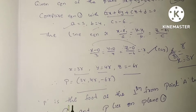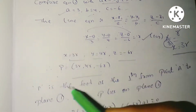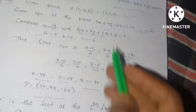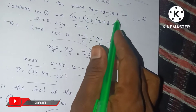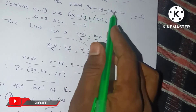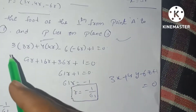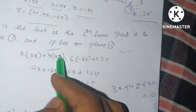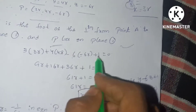Point P is the foot of the perpendicular from point A to the plane, so P lies on plane 1. The plane equation is 3x + 4y - 6z + 1 = 0. Substituting the coordinates of P: 3(3R) + 4(4R) - 6(-6R) + 1 = 0.